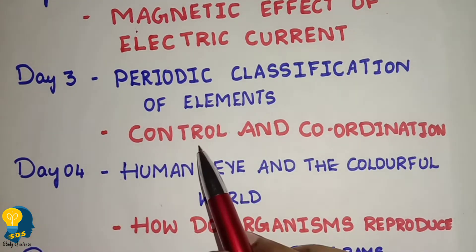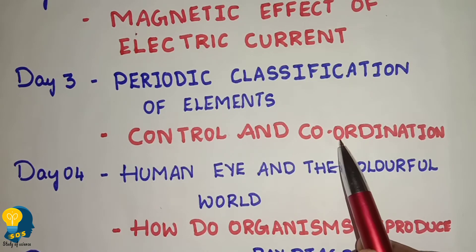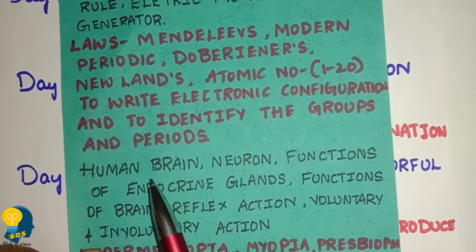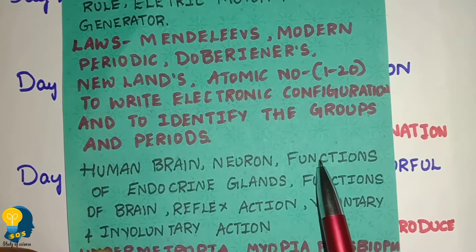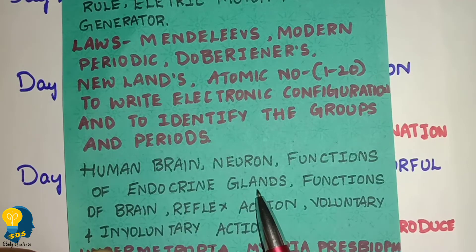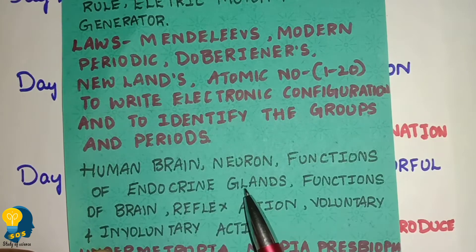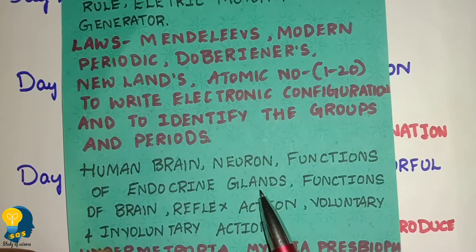Next, practice Control and Coordination lesson on day three. In Control and Coordination, practice the human brain diagram and human brain functions. Study the neuron diagram along with its functions. Study endocrine glands — pituitary gland and adrenaline gland. The pituitary gland is the master gland. Practice hormones, endocrine glands, insulin hormone, and adrenaline hormone.